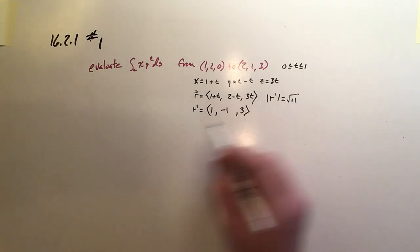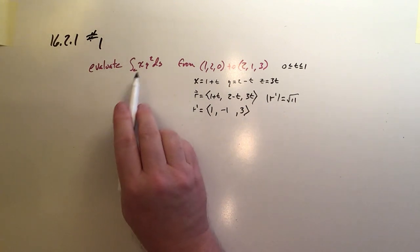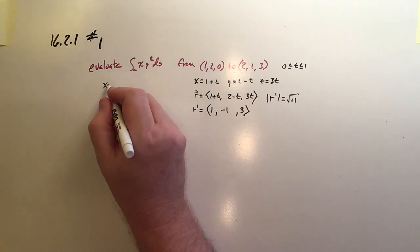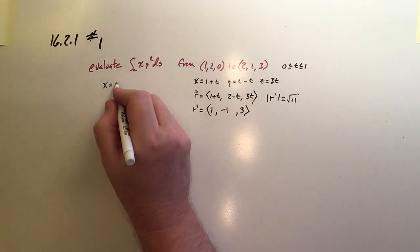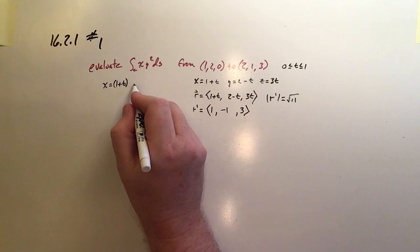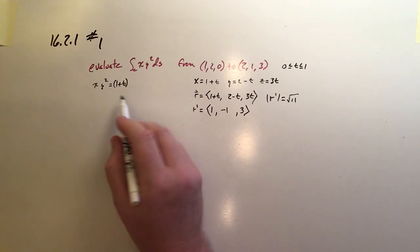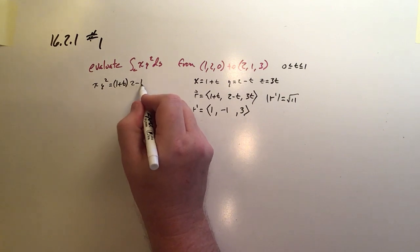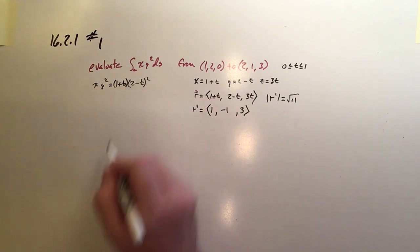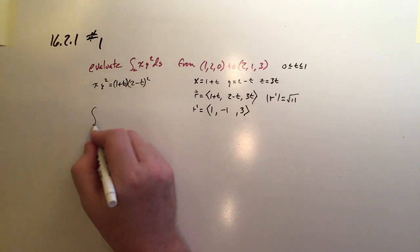So that will become our integrand. X, of course, over here is 1 plus t. And y squared is - let's just write the whole integrand. xy squared is (2 minus t) quantity squared. So now we can build our integrand.